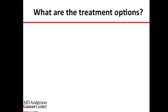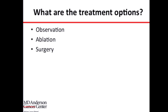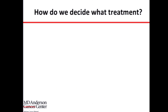Treatment options for patients with local recurrence range from observation — especially if the recurrence is very small and limited — to ablation therapy, to surgical resection, which is the most definitive approach, or systemic therapy, particularly in patients who have both local and metastatic disease. The decision is not simple, and we have to consider patient factors first. How old is the patient? A patient who is 80 is different from one who is 40.